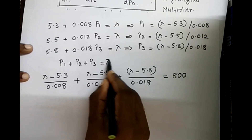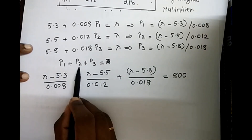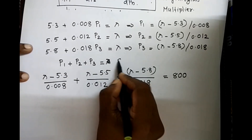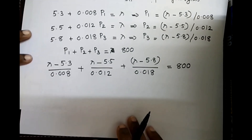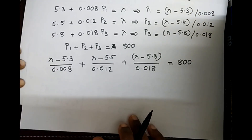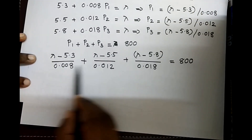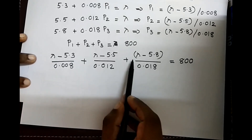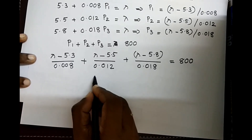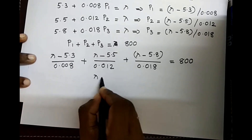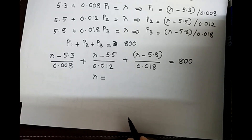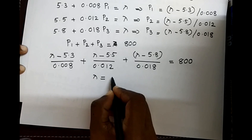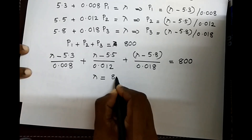Note: P1 + P2 + P3 = 800 (not lambda — correction). This equation contains only one variable. Solving for lambda gives lambda = 8.5.